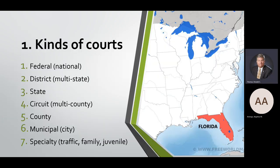First, think about courts as coming in different levels. I have them listed from greatest influence down to least. We have a federal court system created in the U.S. Constitution, so the U.S. Supreme Court is a federal court. There are also some specialized courts at the federal level, and district courts which cover multiple states — those are also federal courts.